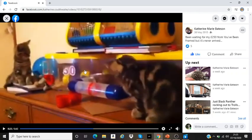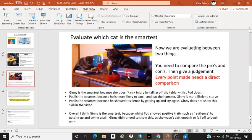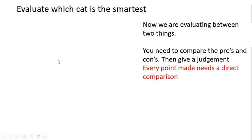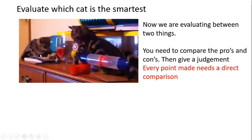I'm still waiting for the money from You've Been Framed for that one! So these two cats — this one on the left is a girl cat called Ginny, and this is our boy cat called Pod. This is very typical of their behaviour. Ginny would sit back and Pod would investigate and do stupid things. They are actually chasing a hamster — hamster was called Mr. Fluffy, rest in peace Mr. Fluffy.